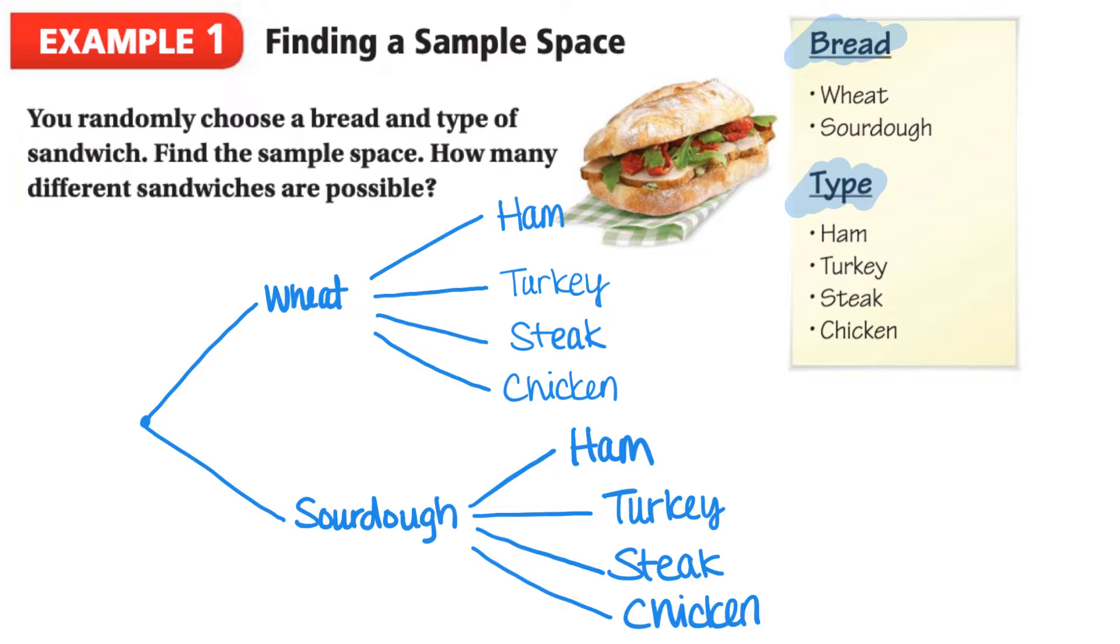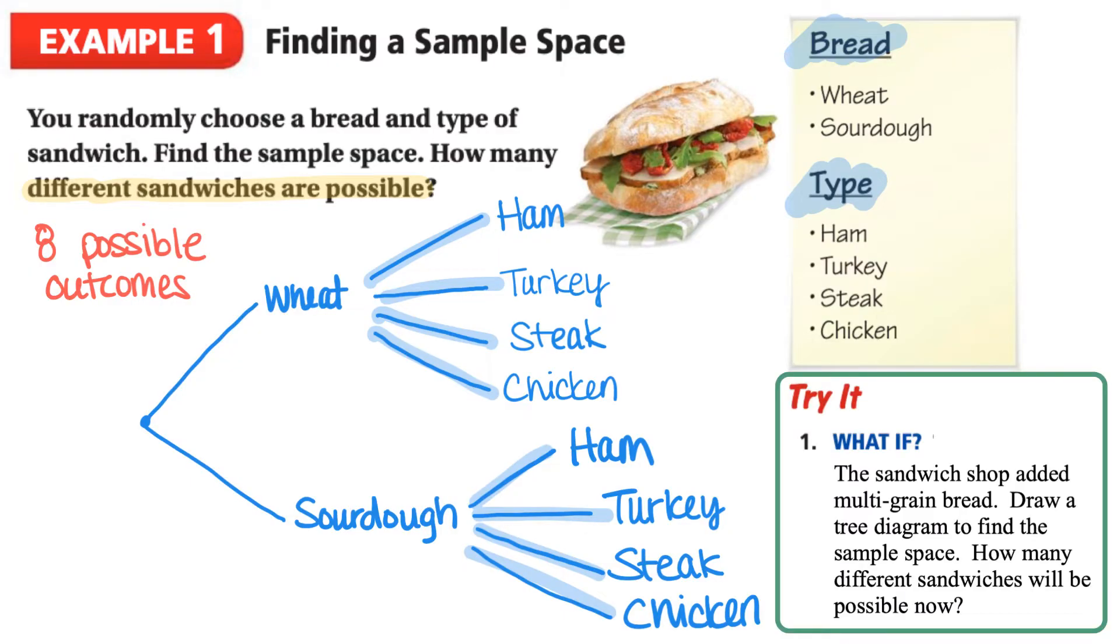And now we can determine the number of possible outcomes. We can do this by counting up these branches. Here we can see that we have eight different possible outcomes: wheat ham, wheat turkey, wheat steak, wheat chicken, sourdough ham, sourdough turkey, sourdough steak, sourdough chicken. Here is our first try question for this video. What if the sandwich shop added multigrain bread? Draw a tree diagram to find the sample space. How many different sandwiches will there be possible now?